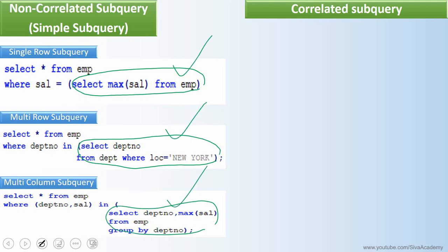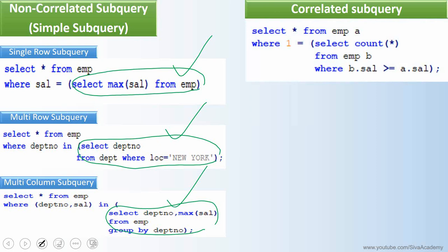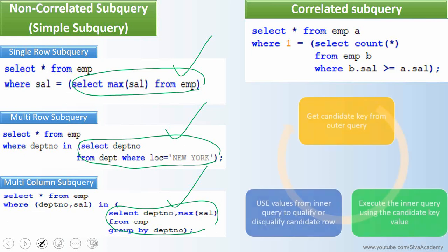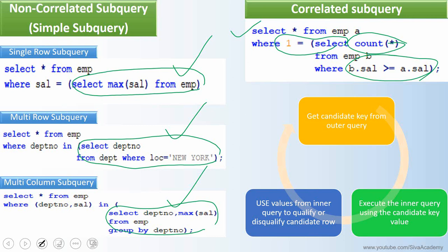In a correlated subquery, the inner query is dependent on the outer query and we cannot execute the inner query separately. The execution starts from the outer query — for every row in the outer query, the inner query gets executed. It evaluates the condition mentioned in the inner query, and if the WHERE condition is satisfied, the candidate row from the outer query is displayed. This continues for each and every row from the outer query.